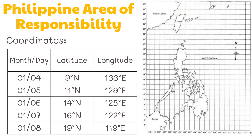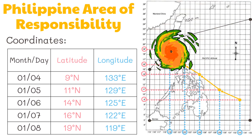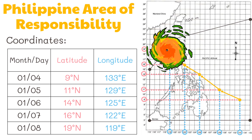Let's try tracking a sample typhoon. Inside the table are sample tracking data. Let's plot these coordinates to know the direction of the typhoon. Using the latitude and longitude in the table, we are able to track the location of the typhoon at a given time. In knowing this, we will be able to forecast if our location is in the path of the typhoon.